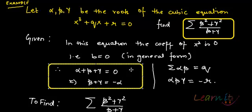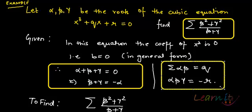I can express any two roots in terms of one root. Next, we have that summation αβ equals q, and the product of the roots αβγ equals minus r.